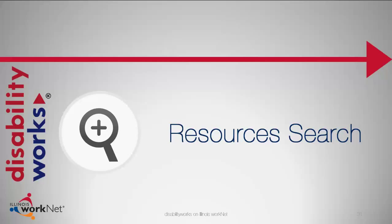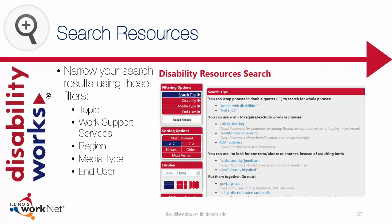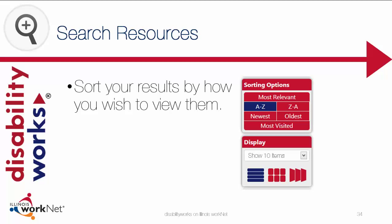Let's take a look at our section on Resources Search. DisabilityWorks offers a very robust search tool to help you find the resources you need for your employment and job training activities. To help you refine your search results, we offer a number of filtering options: Topic, Work Support Services, Region, Media Type, and End User. You can view search tips which include Boolean search tips like including quotes, plus signs, or minus signs. You may also establish how you would like your search results to appear, including A to Z, Newest in a List, or several other options.